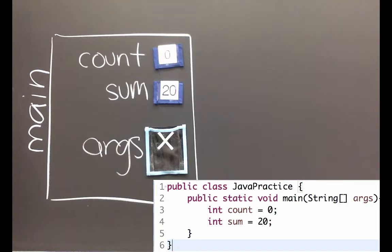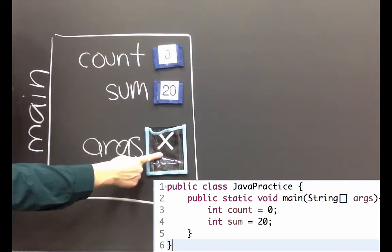Our main method also has an input called args so I've added that and shown it for now just as a null reference.